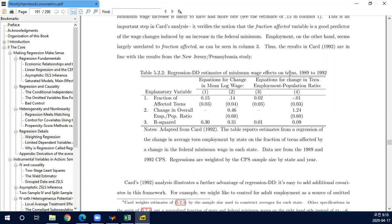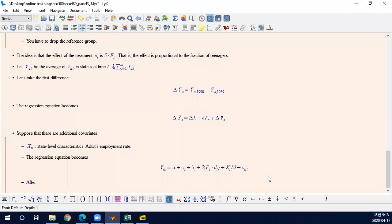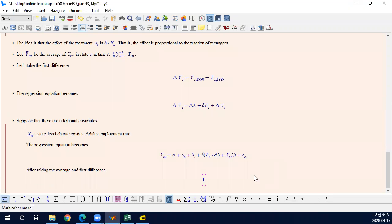And of course, I did not explain it. So because when you take, after taking the average and first difference, you will have similar equation. You have this plus, you will have delta X_s prime beta. So in here, the delta X is the change in employment rate in state s.